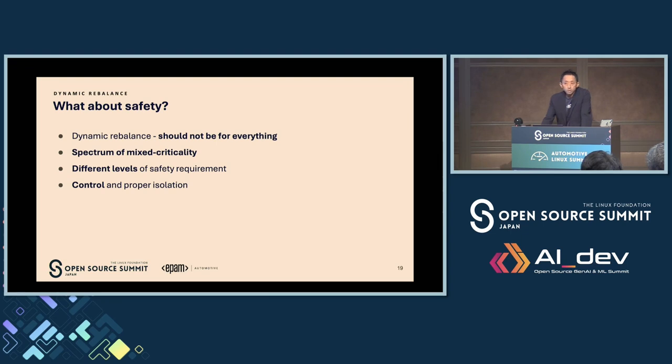What about safety? Dynamic rebalance itself should not be used for everything. You can't easily move a safety-critical service to another node — that shouldn't happen. There's a spectrum or range of criticality to manage, with different levels of safety requirements for each range. You need to control and manage that properly, with proper isolation so technical issues won't affect the safety area.